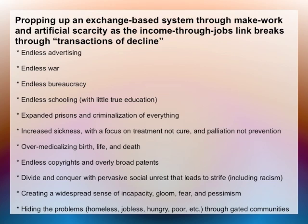There are various ways to prop up an exchange-based economy through make-work and artificial scarcity — what Jane Jacobs might have called transactions of decline. One way is endless advertising to keep people consuming far beyond what they really need. Another is endless war that kills off workers and blows up things, creating new work. There can be endless bureaucracy to waste time, endless schooling to keep people out of the job market, endless prisons, increased sickness, and endless copyrights to prevent people from sharing freely.